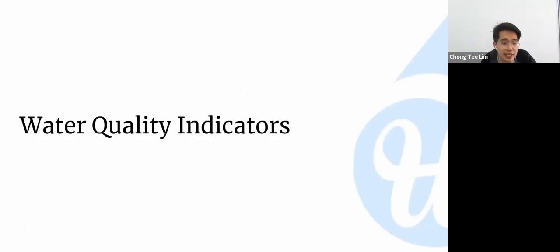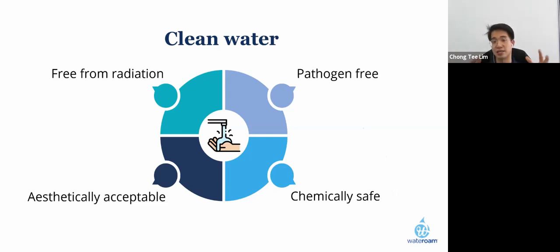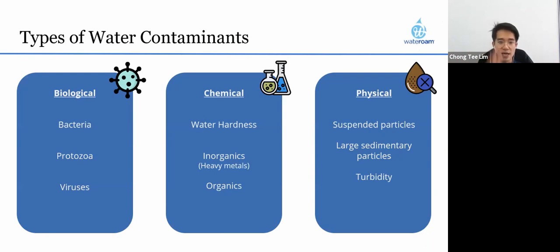The next step is to understand the key water quality indicators. There are four broad requirements for water: it needs to be free from radiation, free of pathogens, aesthetically acceptable — meaning it tastes and smells good — and chemically safe, containing no harmful chemicals for the body. There are three types of water contaminants: biological contaminants, chemical contaminants, and physical contaminants.